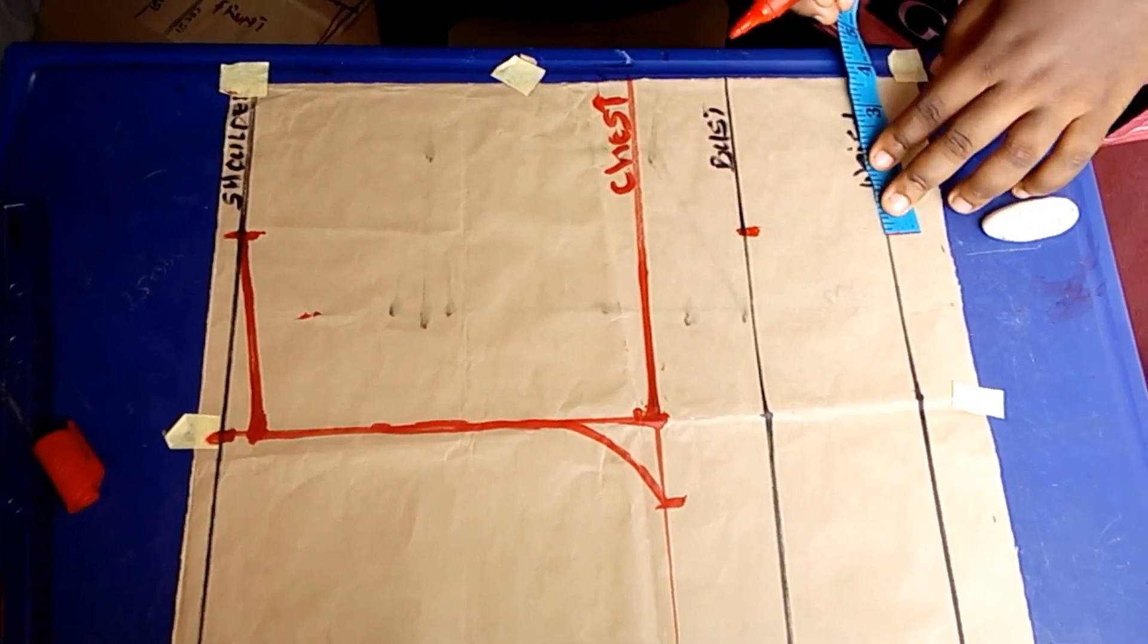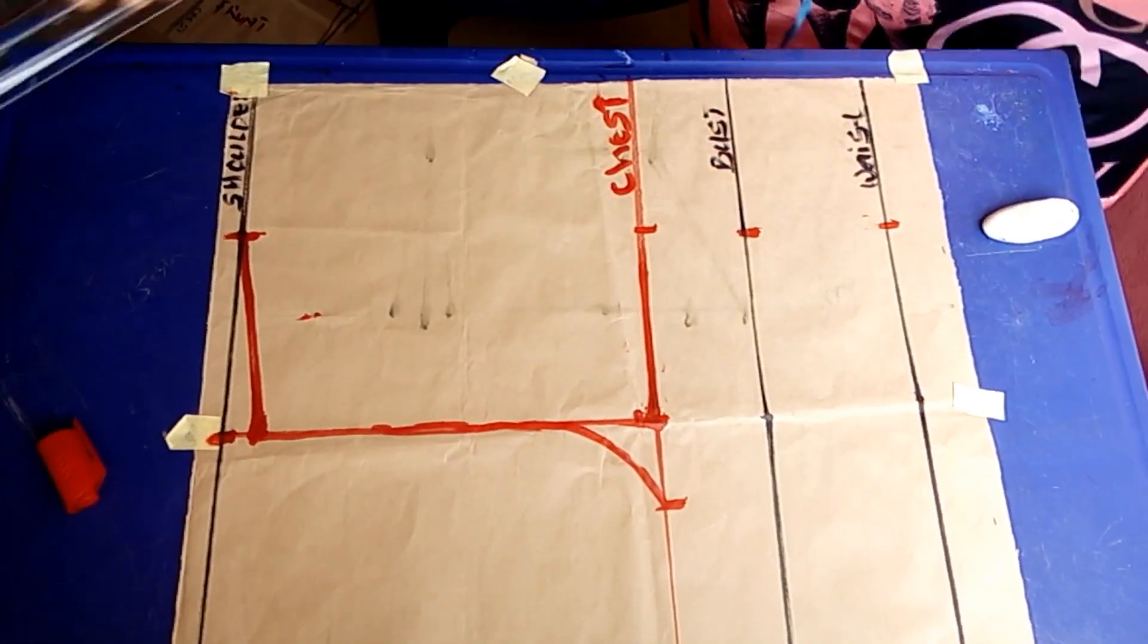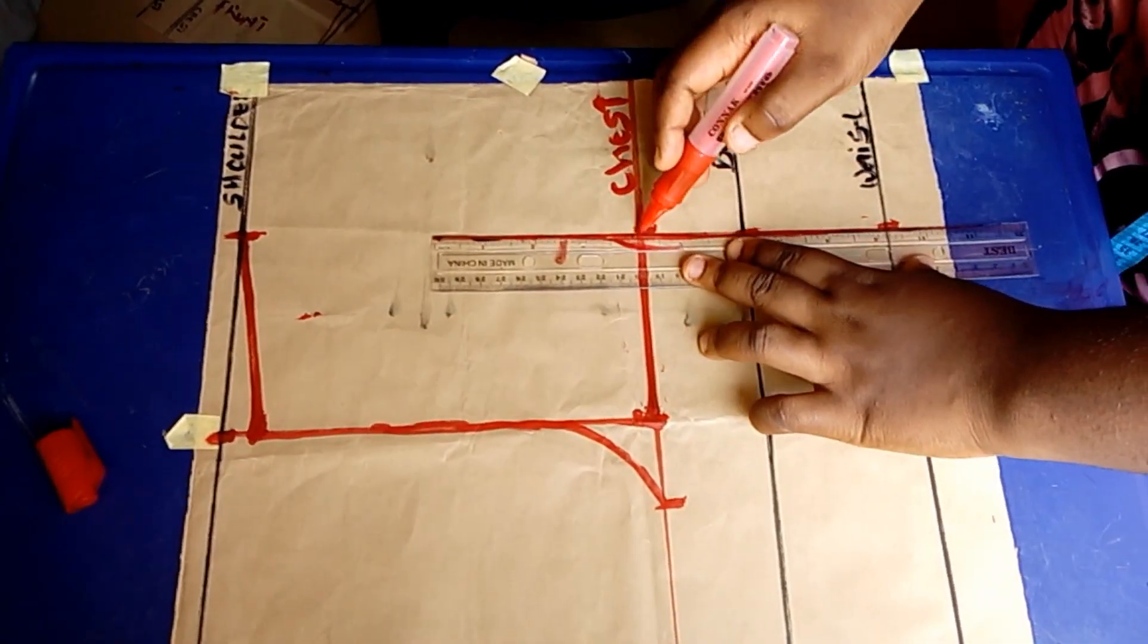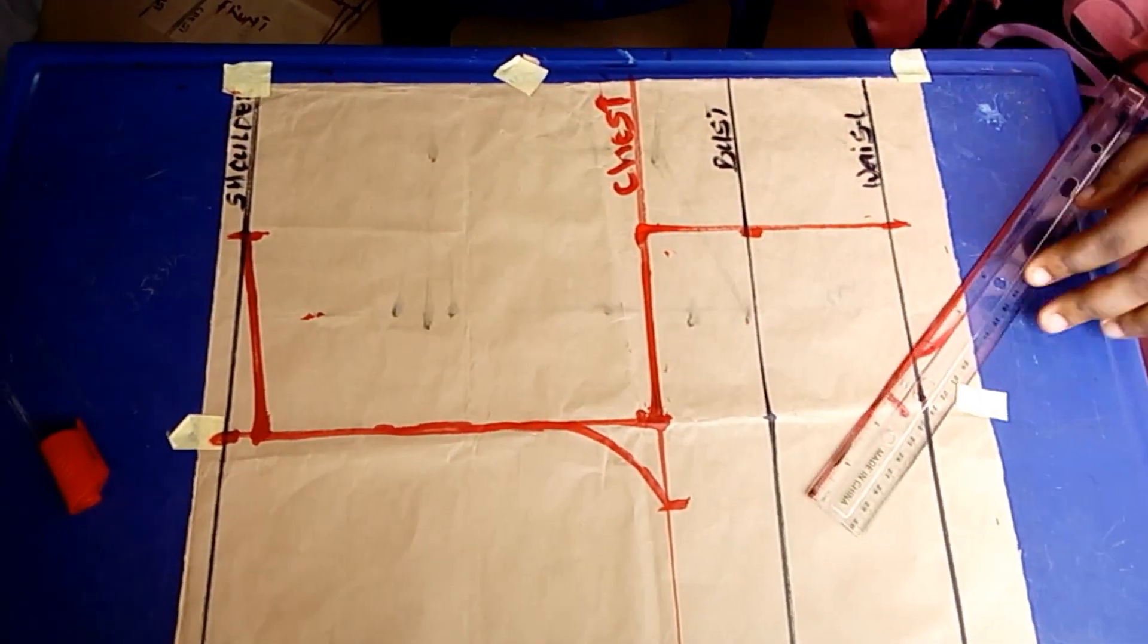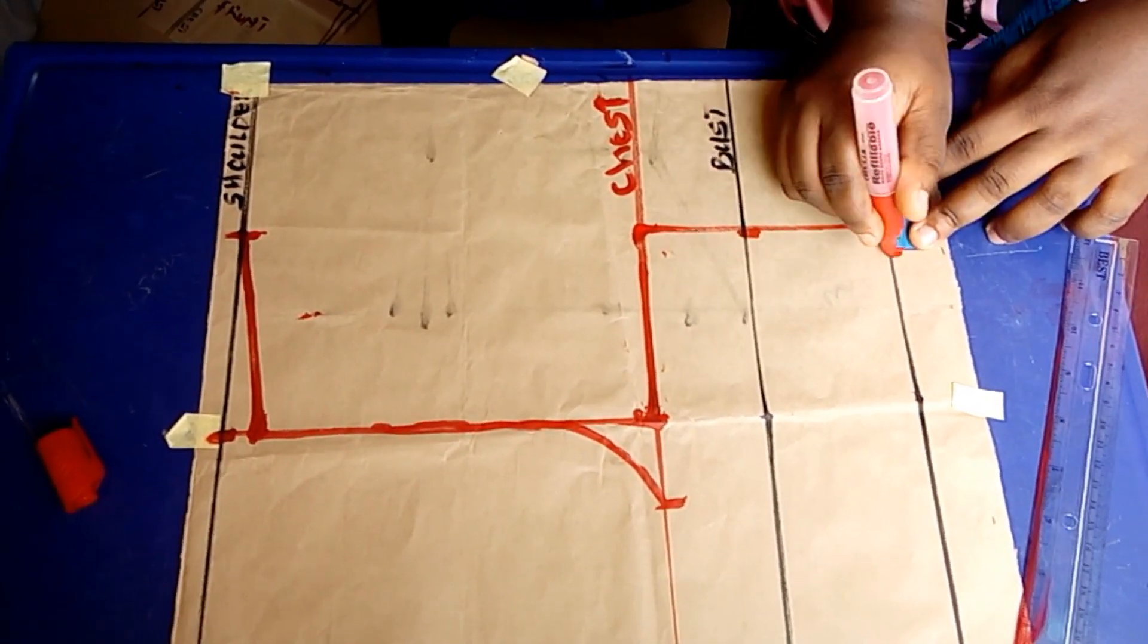Now I'm going to be taking our nipple to nipple measurements for bust span. As you can see, this time I'm taking it up to the chest point. Now this is the back, so there's no need to care about the bust because there's no bust at the back.